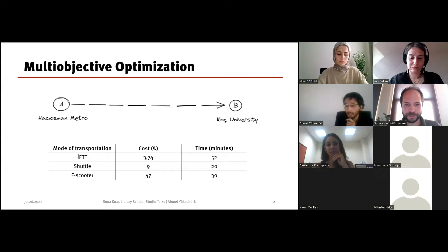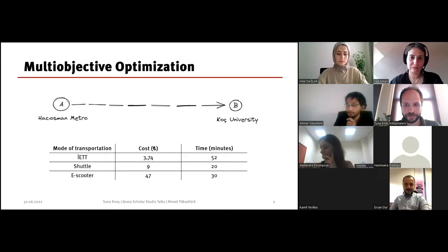Suppose I want to come to Koç University. I'm at Hacı Osman Metro and I have three options. For me, the criteria is cost. I will select public bus ETT because it's the cheapest option and eliminate the other two options, shuttle and scooter.